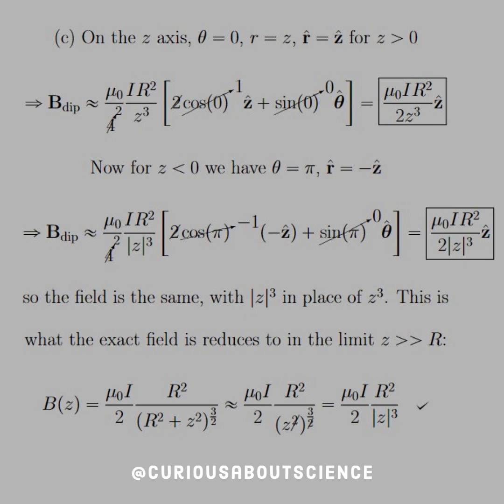Now moving on to C we have to be situationally aware here. On the z axis, on the positive z axis for z greater than 0, theta equals 0, R equals z, and R hat equals z hat positive of course so if we plug these in.